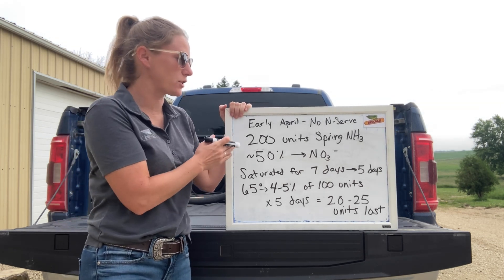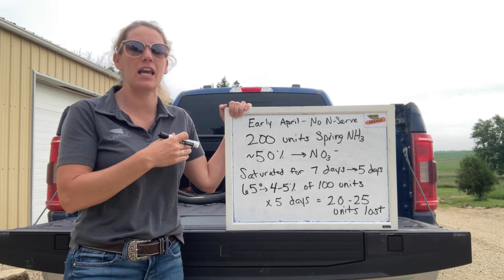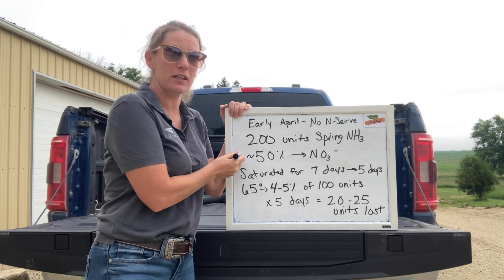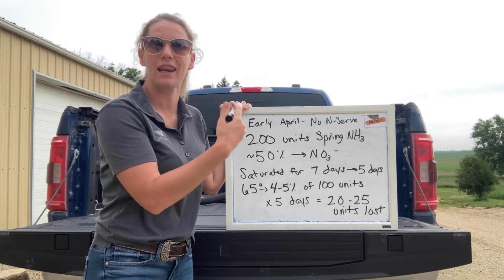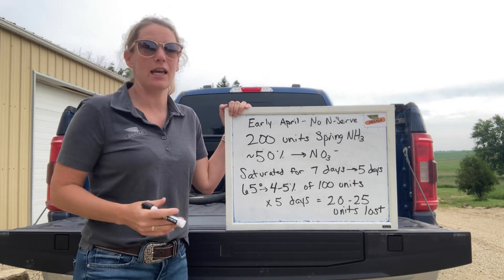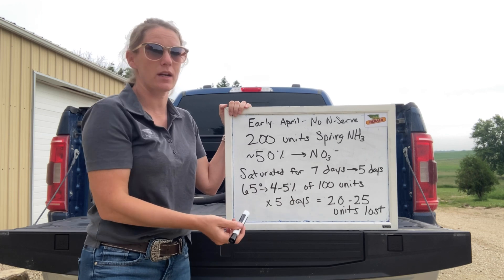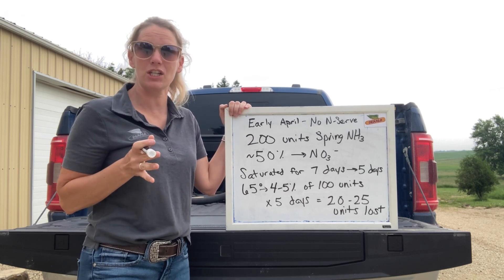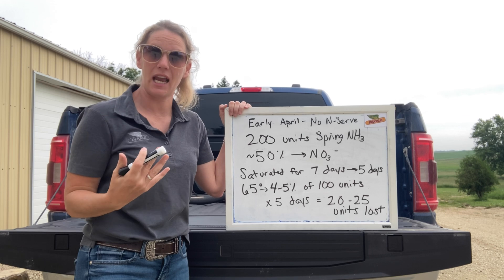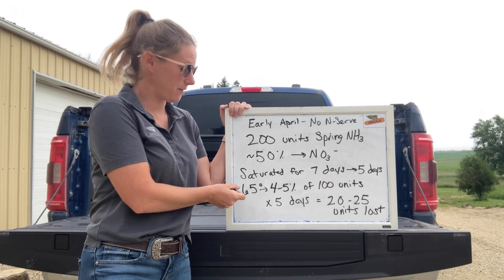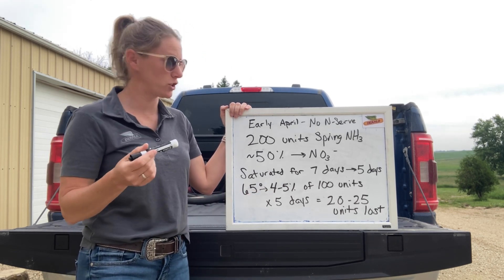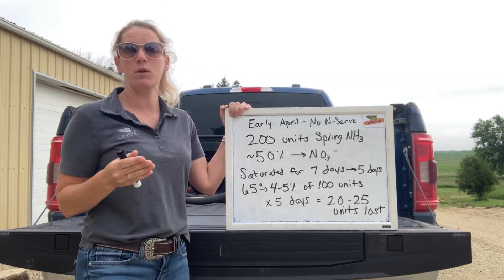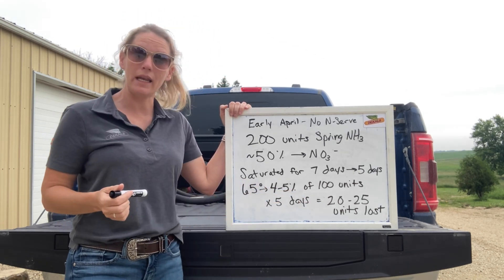Let's run through a pretty common example: a spring anhydrous ammonia application. In this example we'll assume a 200-unit spring ammonia application made in early April. Going off our conversion timeline, we can safely assume about 50 percent of that 200 units has converted to nitrate — so we're looking at about 100 units of nitrate in our soil. Let's say you've had saturated soils for about seven days. It takes about two days to get anaerobic conditions, so we've got five days of denitrification happening. At warm temperatures above 65°F, we get four to five percent loss per day. So 100 units times four to five percent over five days gives us a loss of about 20 to 25 units.